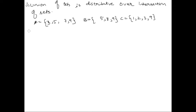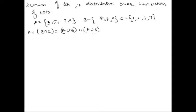We are trying to prove that A union (B intersection C) is equal to (A union B) intersection (A union C). Let's do the left-hand side first. What is B intersection C? B intersection C contains all the common elements in B and C. We see that only 9 is common, so B intersection C = {9}.